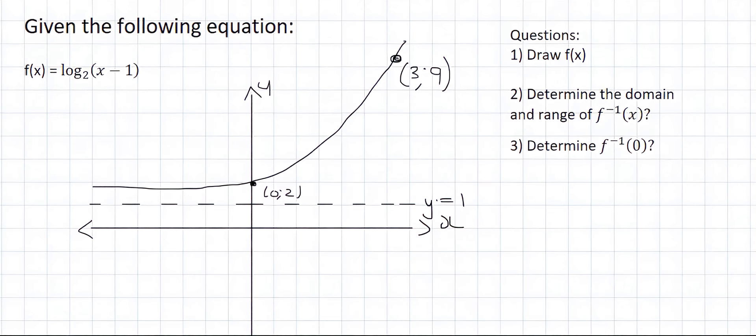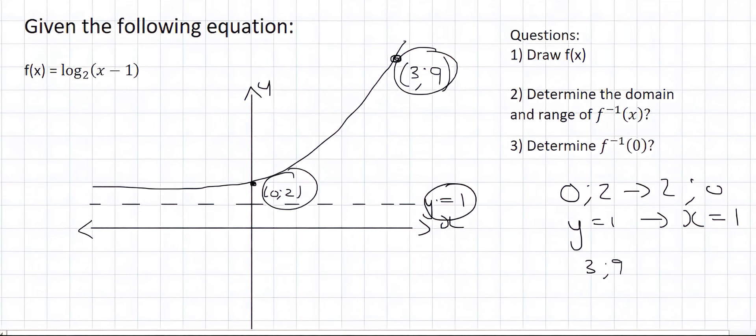But once you have your inverse graph, or any graph, it's easy to find the opposite one by just switching the coordinates around. And so this coordinate, which is 0, 2, will simply switch to 2 and 0. This asymptote, which is y equals to 1, will simply become x equals to 1. And this point here, which is 3 and 9, will simply switch to 9 and 3. Then it becomes quite easy to draw the graph, and that's going to be the log graph.